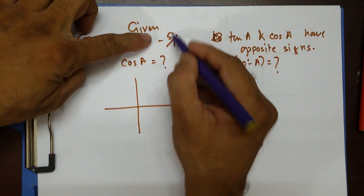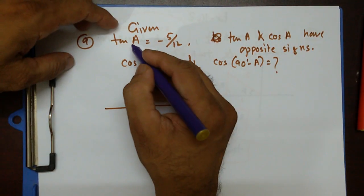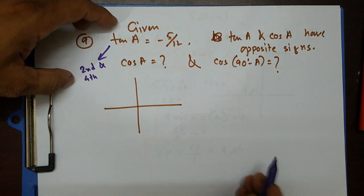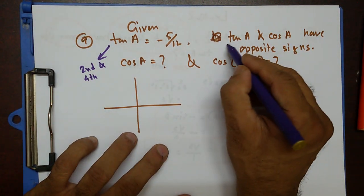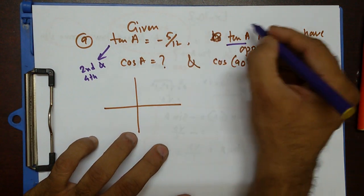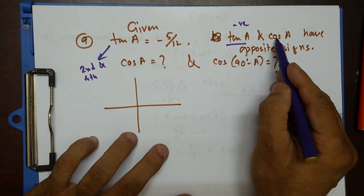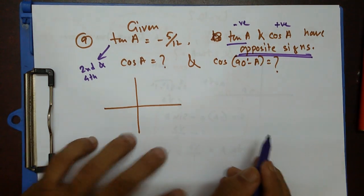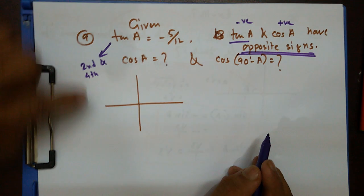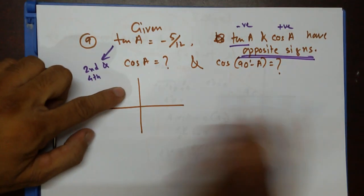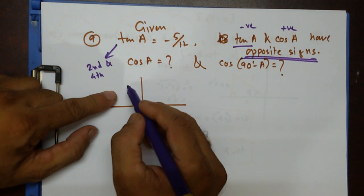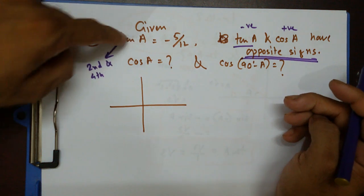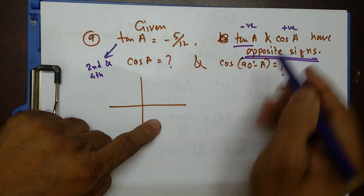Tan a is negative, so it lies in the second or fourth quadrant. Since tan is negative and cos a has the opposite sign, cos must be positive. In the second quadrant, sine is positive but both tan and cos are negative — they'd have the same sign. So the angle must lie in the fourth quadrant, where cos is positive and tan is negative.